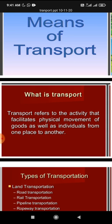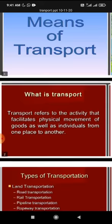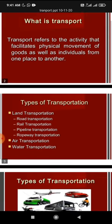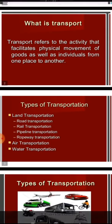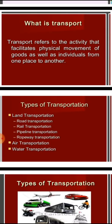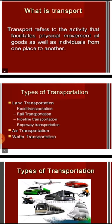Individuals, persons who go from one place to another place — family, friends, business, work — that is transport. Now, types of transportation: land transportation, air transportation, and water transportation.